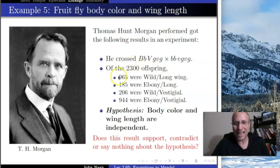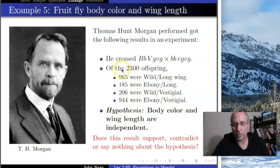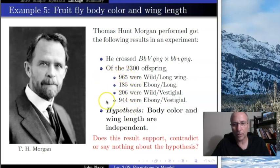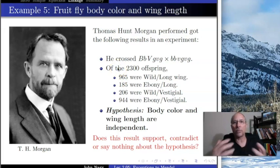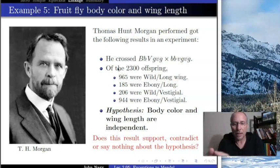Thomas Hunt Morgan performed exactly that cross and got these results: 965 were gray long, 185 were ebony long, 206 were gray vestigial, and 944 were ebony vestigial. Just looking at those data, it's not equal numbers of each. There are far more of two types — wild type and the double mutant — than the other two combinations. This is exactly not Mendelian; it's not following the Mendel pattern where traits are independent.